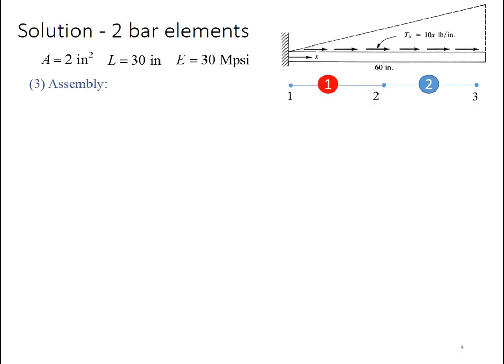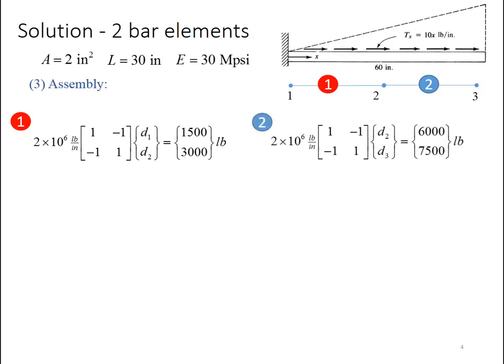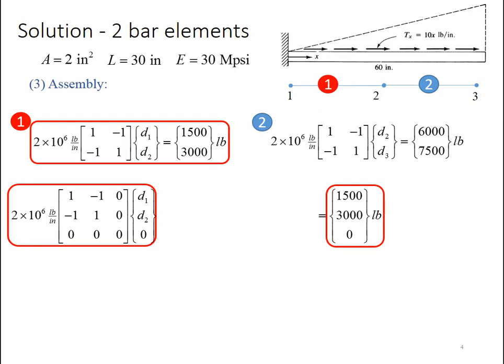Once we have the element stiffness matrices and the element distributed force vectors, we can go to the assembly stage. So we've got first off for element 1 and then secondly element 2, a Kd equals f expression.